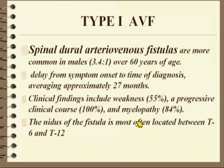Type 1 AV fistula — spinal-dural fistulas — more common in males. The classic presentation is progressive step-wise myelopathy. You're looking for the secondary effects of the fistula that is out peripherally — essentially venous hypertensive myelopathy, with high signal within the cord.